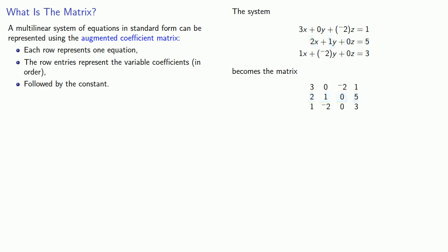And finally the third row of the matrix corresponds to the third equation with entries 1, negative 2, 0, and constant 3. In order to distinguish between the coefficients and the constant term, it is convenient to draw a vertical line separating them. And finally we typically enclose the whole matrix either in brackets or in parentheses.